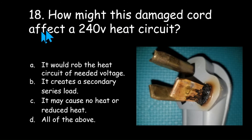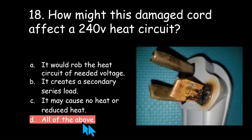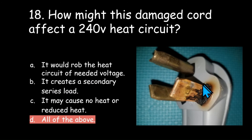How might a damaged cord affect a 240 volt heat circuit? It would rob the heat circuit of needed voltage, it creates a secondary series load, it may cause no heat or reduced heat, or all of the above? The answer is all of the above. It robs the heat circuit of needed voltage with a voltage drop across the terminal, it creates a secondary load where heat is produced at that damaged point, and it may cause no heat or reduced heat because it's robbing voltage from the element.